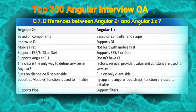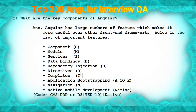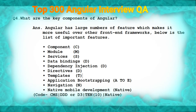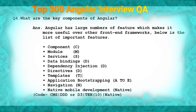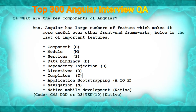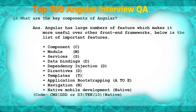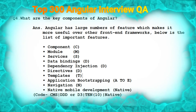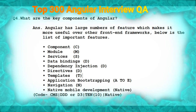The next question is: what are the key components of Angular? Angular has a large number of features which make it more useful over other frameworks. The important features are: component, module, service, data binding, dependency injection, directives, template, application bootstrapping, navigation, and native mobile development. You can recall these easily with the association: CMS D3 then 10 Native — like 'in CMS there were three dogs and 10 native speakers co-existing with each other.'